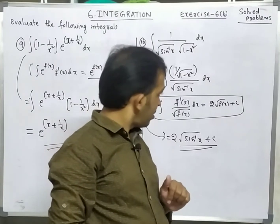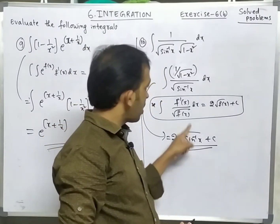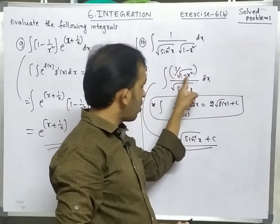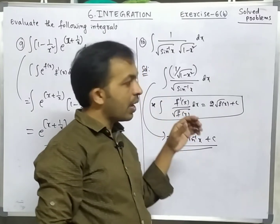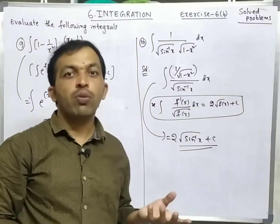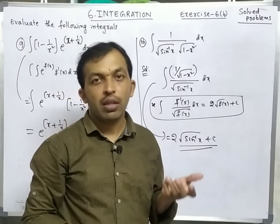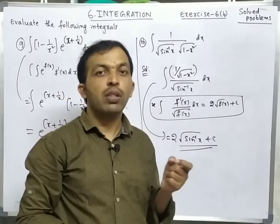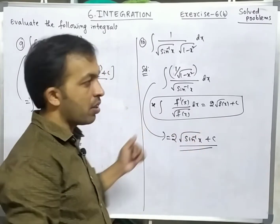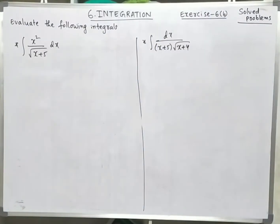The derivative of sin⁻¹x is 1/√(1-x²). We can also take sin⁻¹x = t, then (1/√(1-x²)) dx = dt, and solve by substitution method. Next problem: integration of x²/√(x+5) dx.